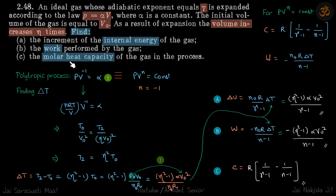This is a polytropic process where the polytropic constant is minus one. We have seen that for any polytropic process, the molar heat capacity is given by this, and work done is given by this.